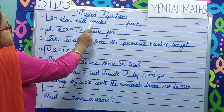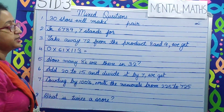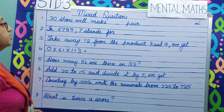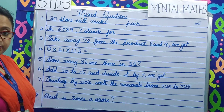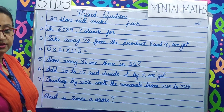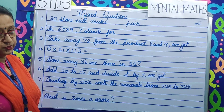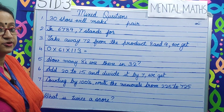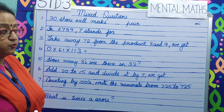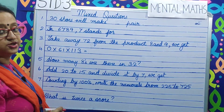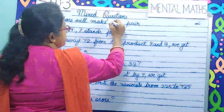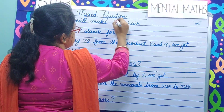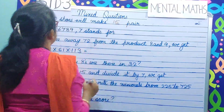30 shoes will make how many pairs? 1 pair equals 2, so 30 divided by 2. The answer is 15.